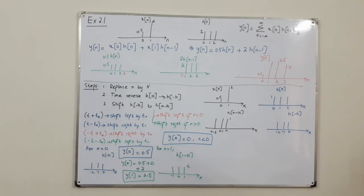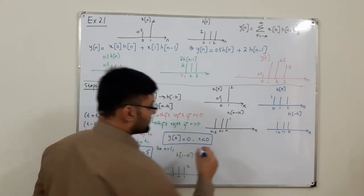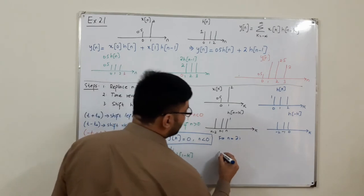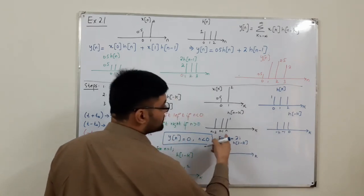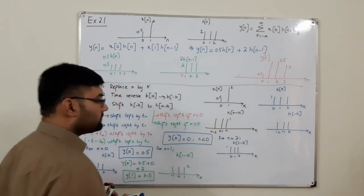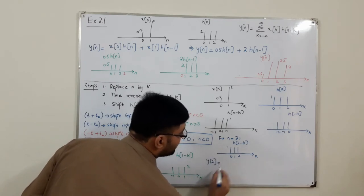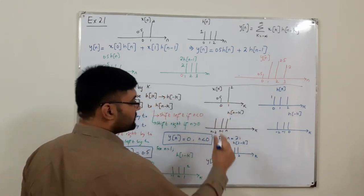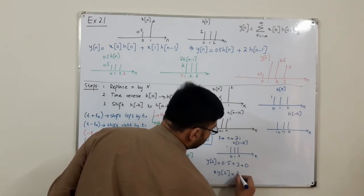For n equal to 2, shift right by 2, so h of 2 minus k is at 2, 1, and 0. Multiplying with x of k: at k equals 0, x of 0 is 0.5 times 1 equals 0.5. At k equals 1, x of 1 is 2 times 1 equals 2. At k equals 2, x is 0 times 1 equals 0. So y of 2 equals 2.5.